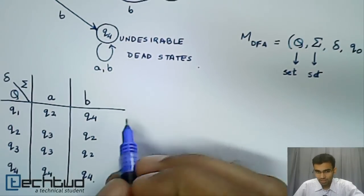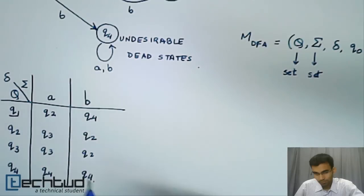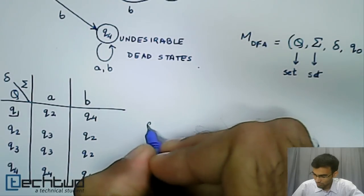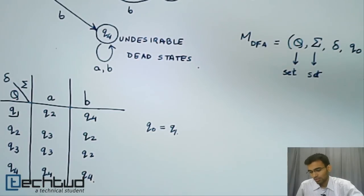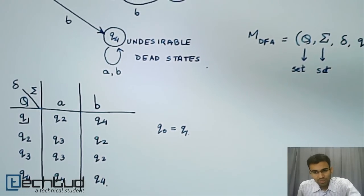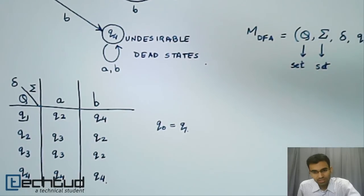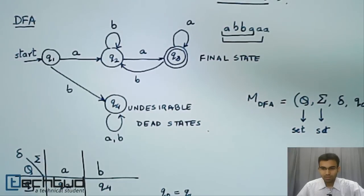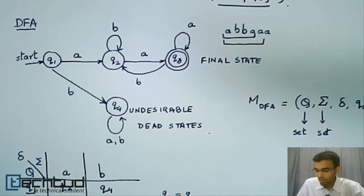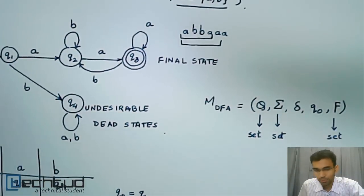So our initial state here is Q1. In this case, Q0 is equal to Q1. So from now onwards, all our DFAs or NFAs that we draw will start with an initial state of Q0.